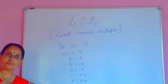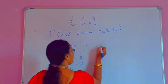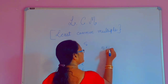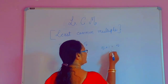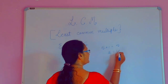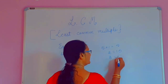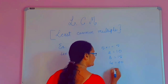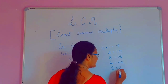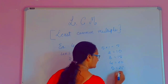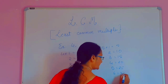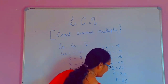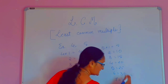You go on writing the multiples of one number. And then you write the multiples of the number 5. 5 ones are 5. 5 twos are 10. 5 threes are 15. 5 fours are 20. 5 fives are 25. 5 sixes are 30. 5 sevens are 35. 5 eights are 40. And so on.